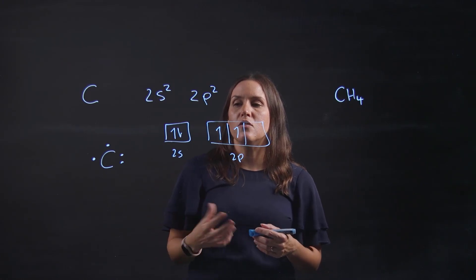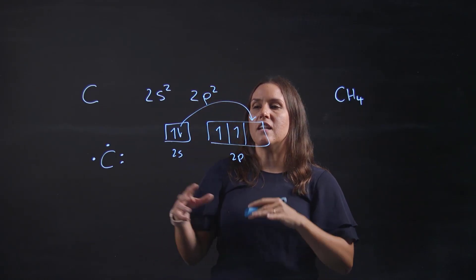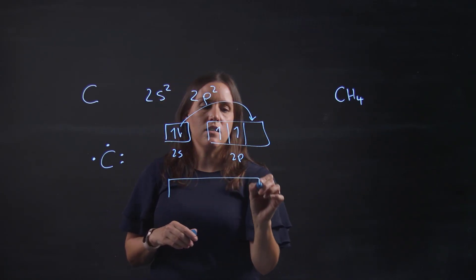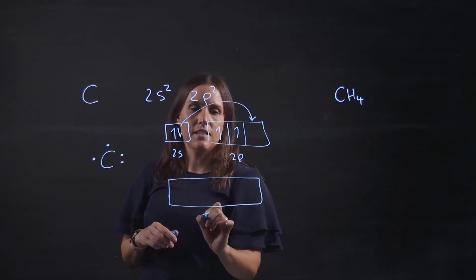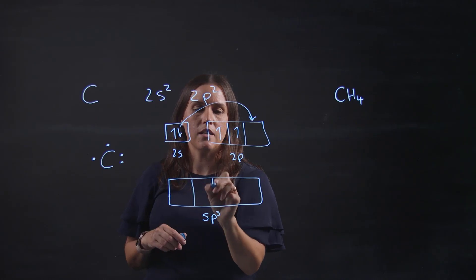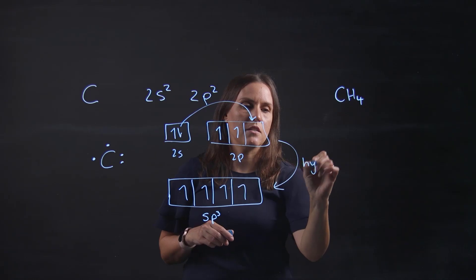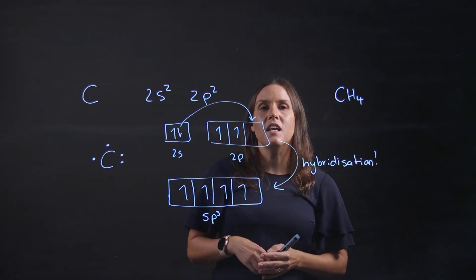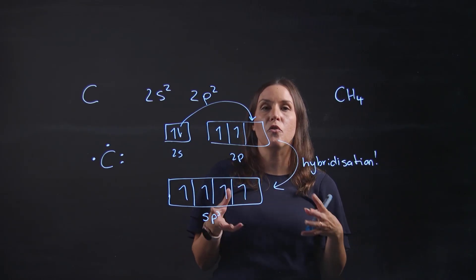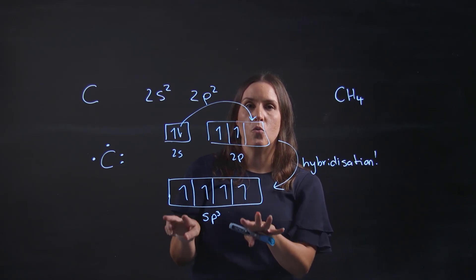What it's going to do is promote up one of those s electrons into the p block and then mix the s and p orbitals together. What you get is sp, and we're going to use one, two, three p orbitals. So it's sp³ hybridized. When the atom mixes the 2s orbital and the three 2p orbitals it results in four equal sp³ orbitals.